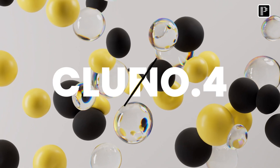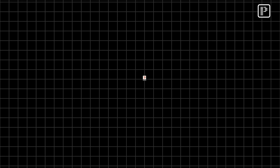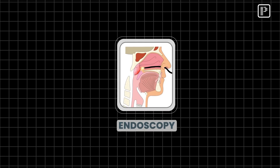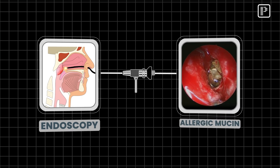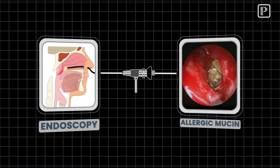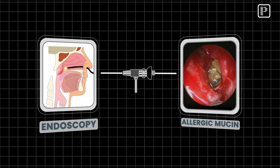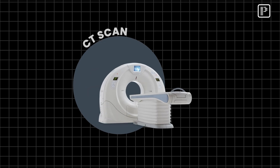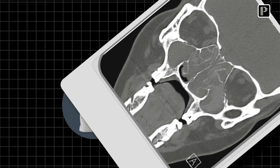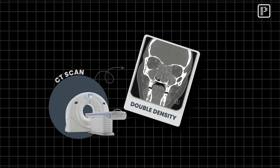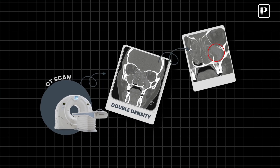Clue number four: on endoscopic examination you see allergic mucin. And the last clue — I'm sure by now everybody knows the answer — CT scan shows you a double density sign. There is a heterogeneous density in the sinuses.